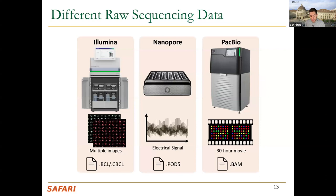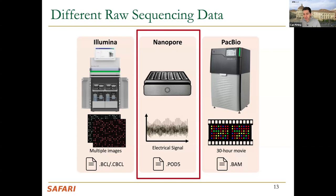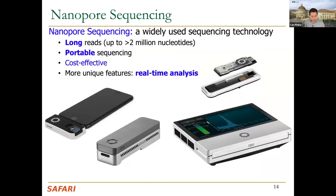The differences in accuracy and read length arise from how each sequencer works. Illumina generates images: by examining them you determine whether there's an A or T at a certain read position. Nanopore generates electrical signals, and by analyzing these signals you determine which base is being sequenced. Today's focus is on Nanopore sequencing data.